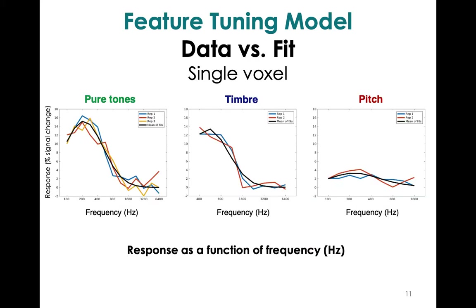Looking at a single voxel for a single subject, we can compare the model fit to the data. On the y-axis we have the response, and on the x-axis we have the tones ordered from low to high for each condition. The colorful lines are the data and the black line in each plot is the fit. The model is doing a pretty good job fitting the data. You might also notice that the tuning looks stronger for the pure tones and the timbre than for pitch, at least for this voxel.